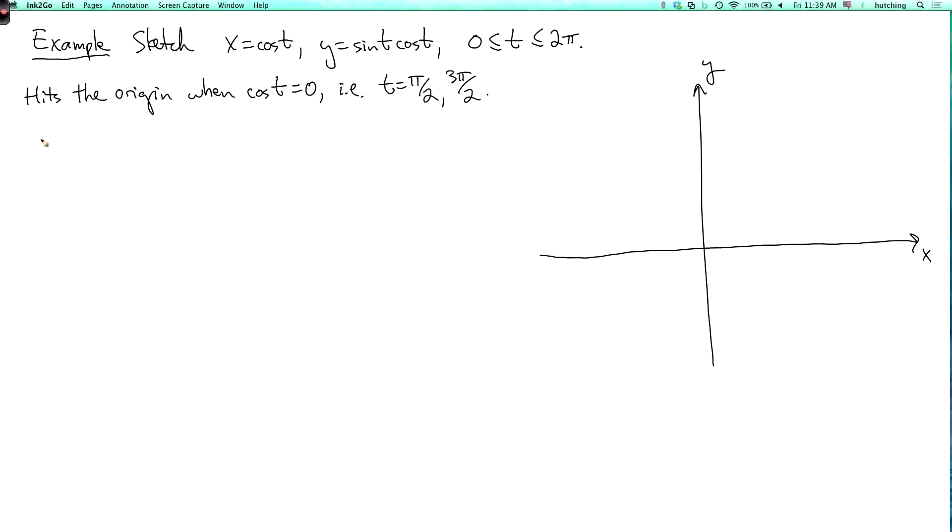Well, let's calculate the slope. So the slope is dy dt divided by dx dt. So dy dt, the derivative of sine t gives me cosine squared t and the derivative of cosine t gives me minus sine t. So cosine squared t minus sine squared t and then dx dt is minus sine t. So let's plug in some values. At t equals pi over 2, what's the slope? Well, cosine is 0 and sine is 1. So I have 0 minus 1 over minus 1, which is 1.